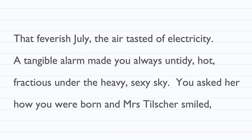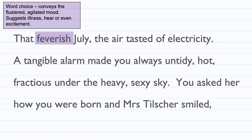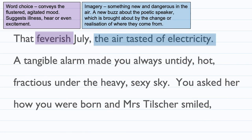The last stanza says: 'that feverish July, the air tasted of electricity. A tangible alarm made you always untidy, hot, fractious under the heavy, sexy sky. You asked her how you were born. And Mrs Tilscher smiled.' We're going to highlight 'feverish July' — this is word choice conveying the feeling of being flustered, an agitated mood, just as she feels agitated after hearing about where babies come from. It also suggests illness, heat, or excitement — a mixture of emotions as she goes into puberty. 'The air tasted of electricity' uses imagery to suggest something new and dangerous in the air; she can feel something about to happen, brought about by the realisation of where babies come from.